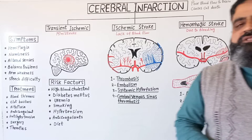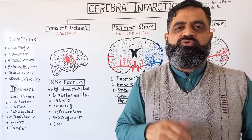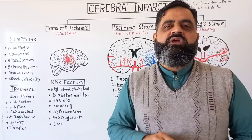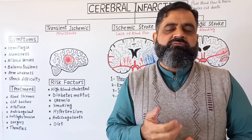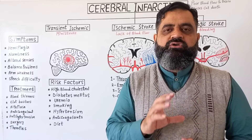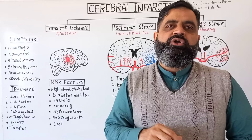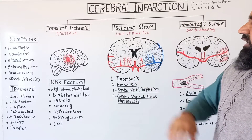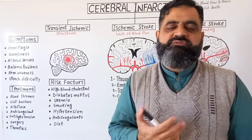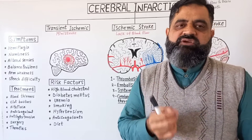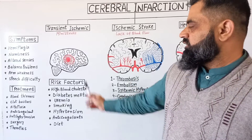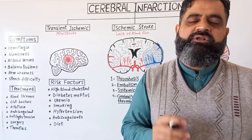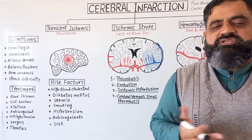Number three, systemic hypoperfusion — a reduced amount of blood flow due to various causes reaching different parts of the brain. Number four, cerebral venous sinus thrombosis — blood can accumulate in the brain's sinuses due to thrombus formation, or blood flow is reduced, which can also lead to stroke. The third type is transient ischemic stroke, also known as mini stroke — a very mild, temporary form of stroke that can be treated easily, involving either ischemic or hemorrhagic mechanisms in a very small degree.